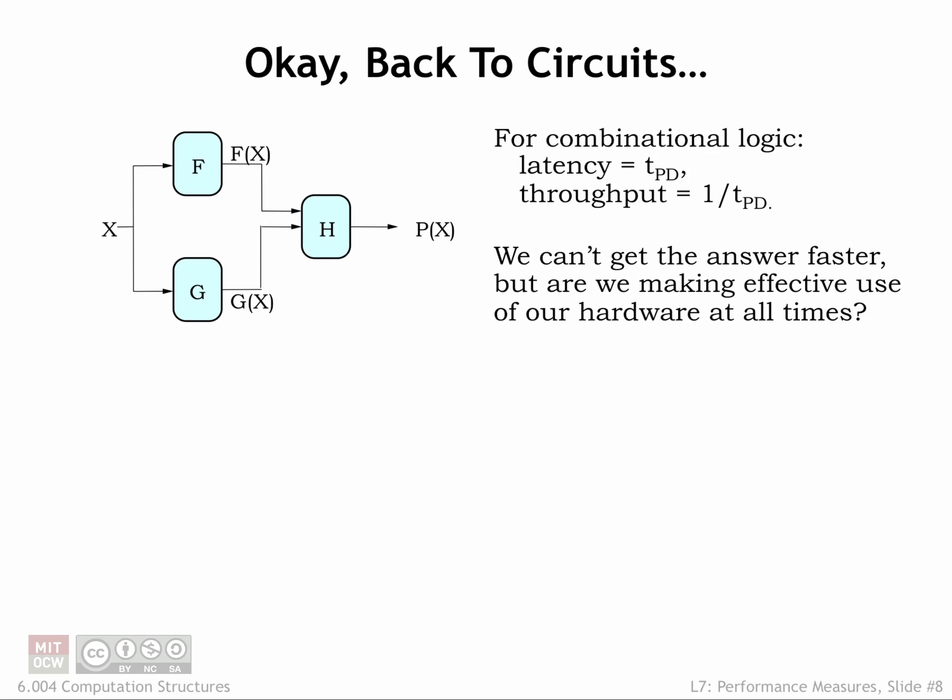Now let's apply all this analysis to improving the performance of our circuits. The latency of a combinational logic circuit is simply its propagation delay, TPD. And the throughput is just 1 over TPD, since we start processing the next input only after finishing the computation on the current input.